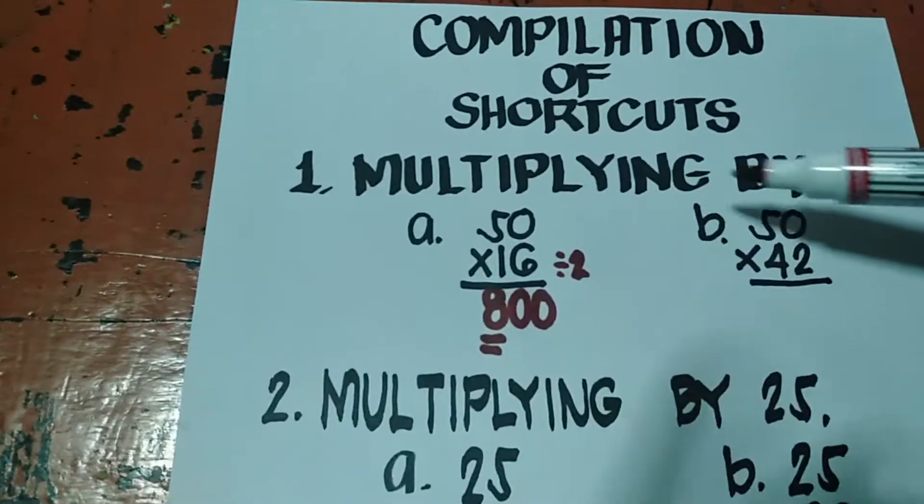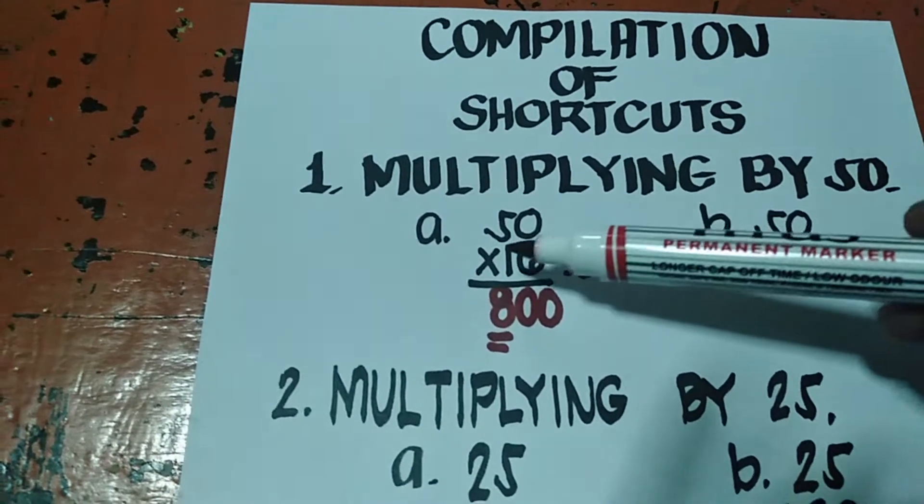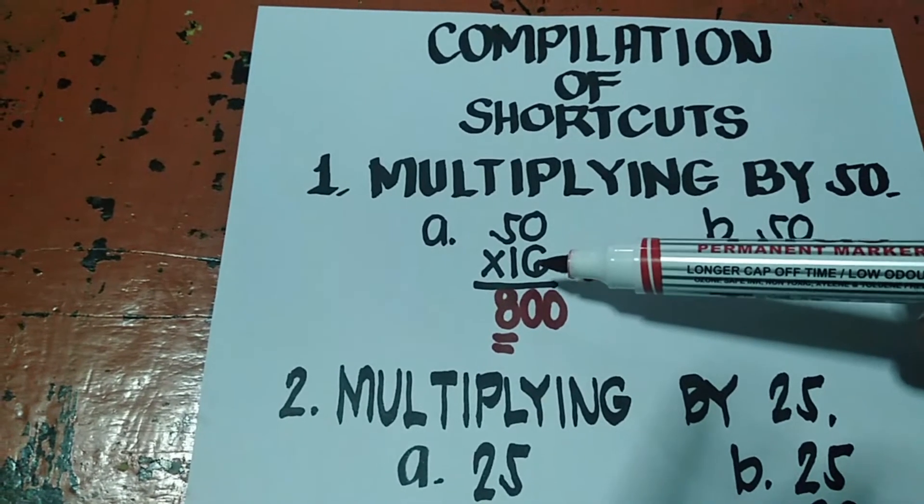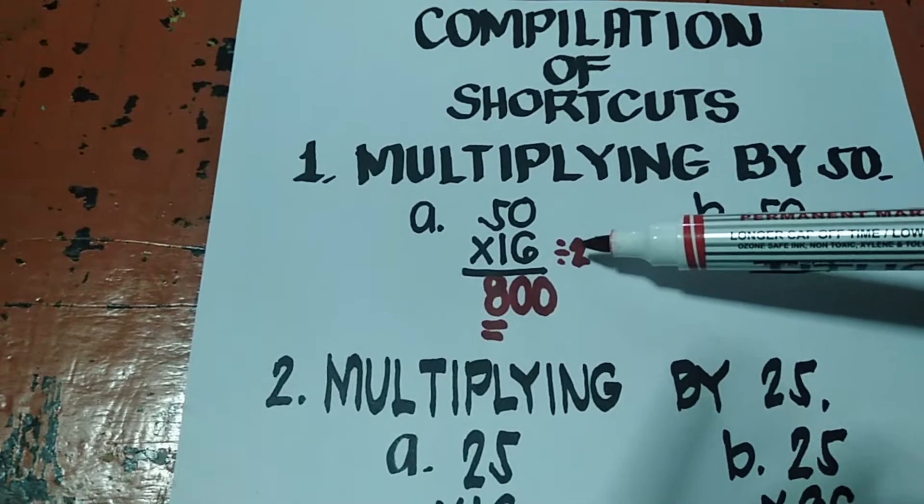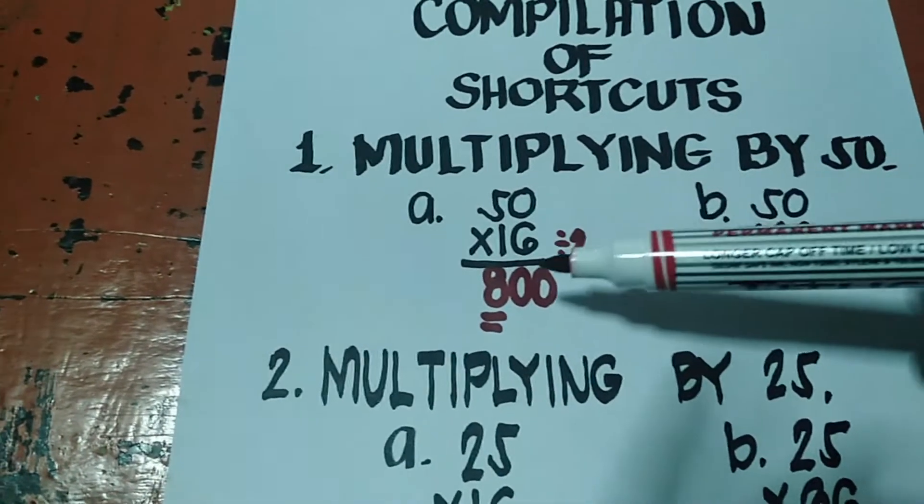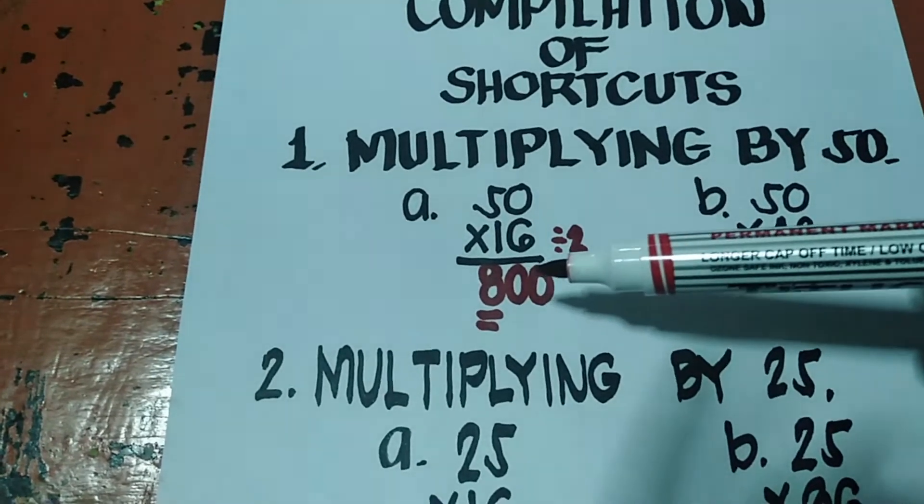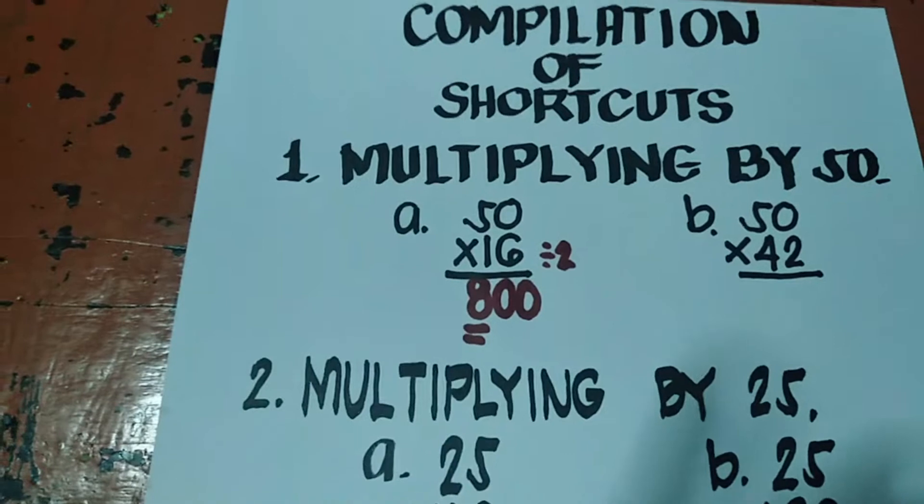Ulitin ko. Pag multiplying by 50, so 50 times 16, yung multiplier niya, didivide mo sa 2 or kukunin mo yung kalahati niya. Kalahati niya ay 8. Tapos magdadagdag ka ng dalawang 0. So 800. Ganoon lang yung shortcut niya.